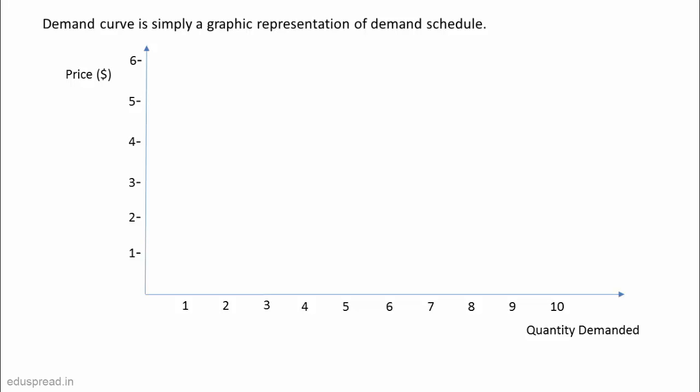While drawing a demand curve, we take price on the vertical axis and quantity demanded on the horizontal axis. Now I can just replicate the combinations of price and quantity demanded that I recorded in the demand schedule on this graph. These six points here represent those combinations. And now I can simply join these points to get our demand curve.